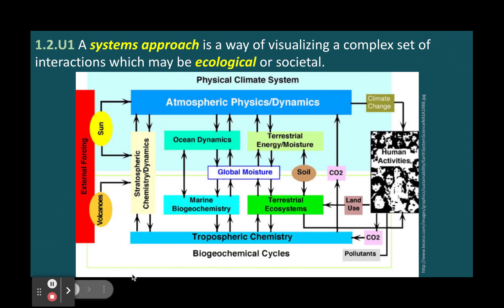For example, the emergent property of an ecosystem is its biodiversity, which is the variety of life forms and their interactions within the system. Biodiversity is not a property of any single organism, but of the whole ecosystem.